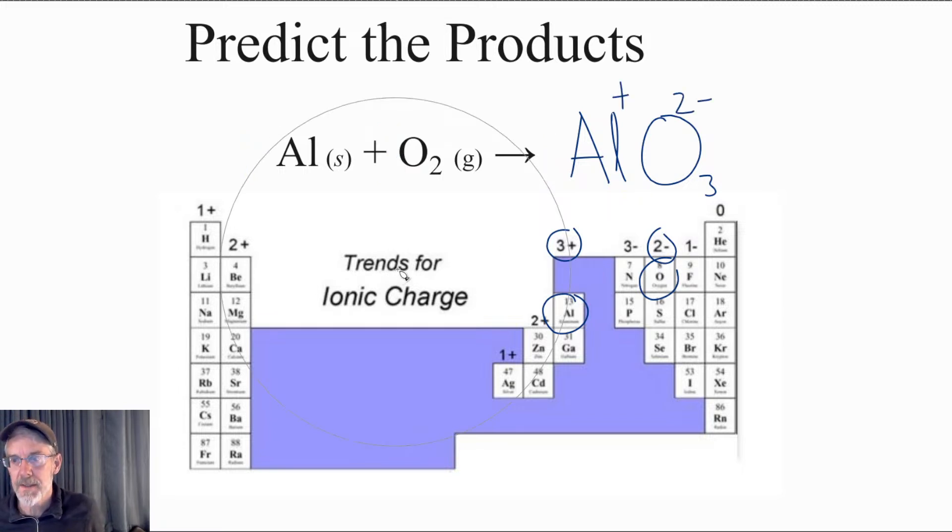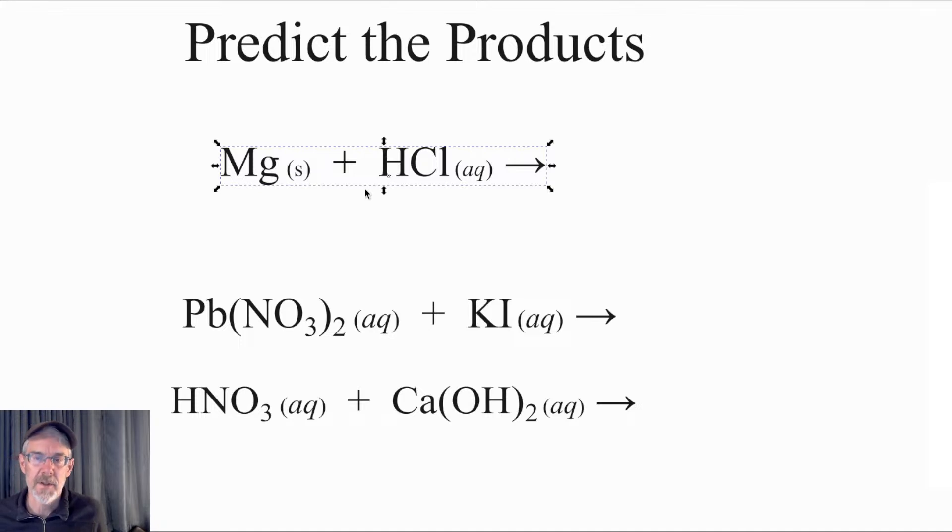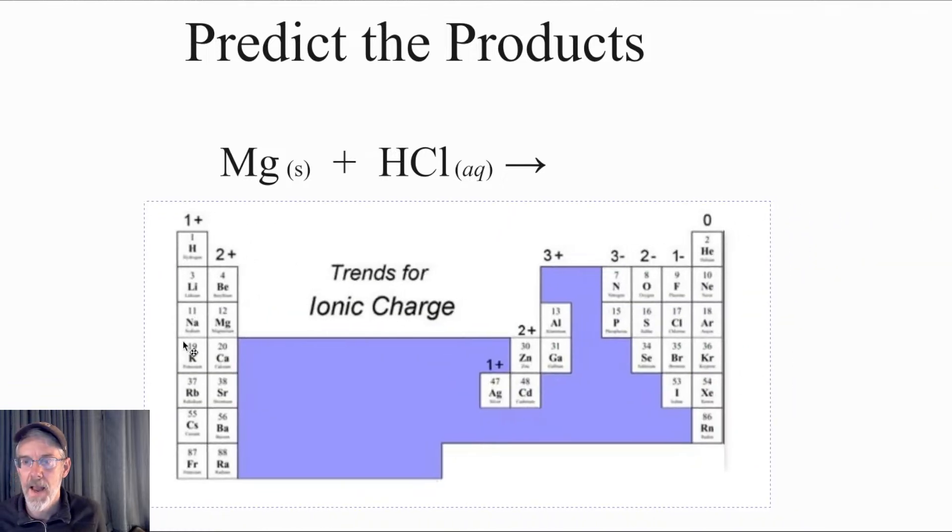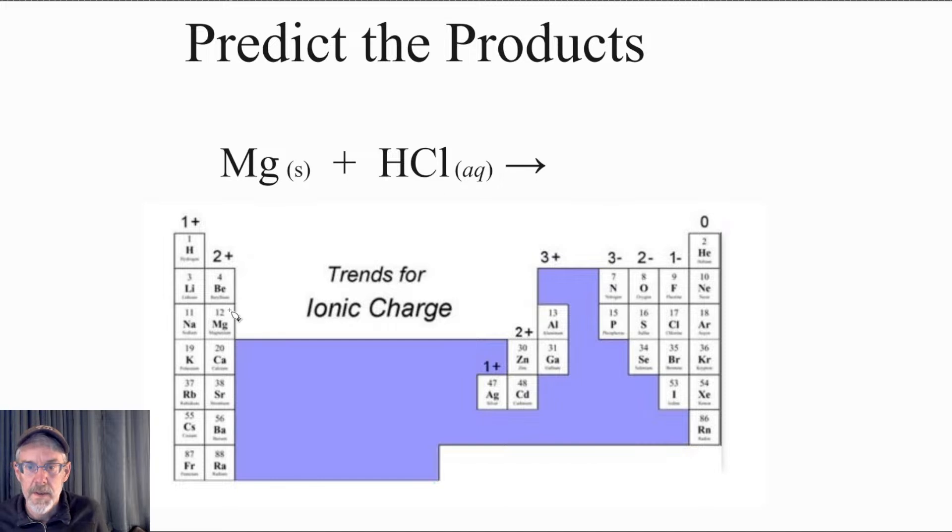So that's the process. When we're predicting the products of a reaction, that's the process that we'll go through. Let's see if we can't give you a chance to do one here. I'm going to get rid of this since we're done. See if you can figure out the type of reaction and then what you'll end up getting. Magnesium plus HCl.